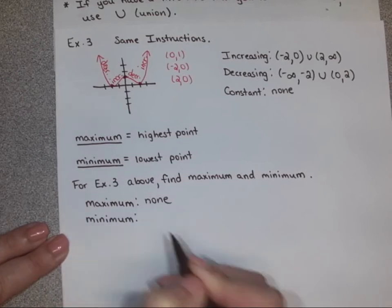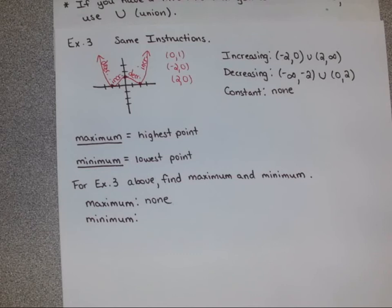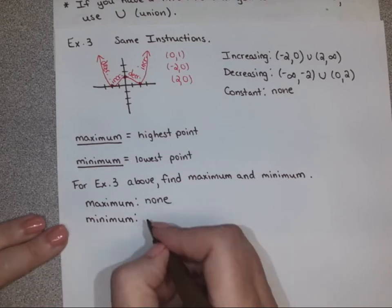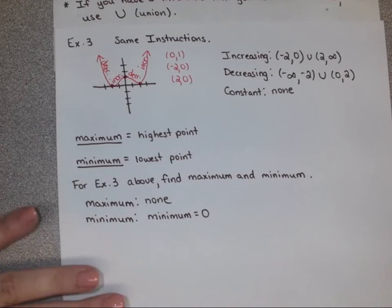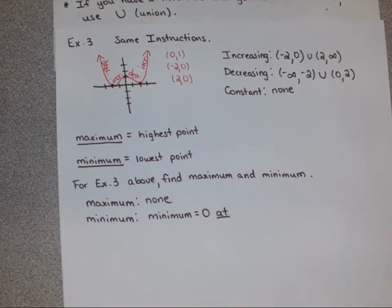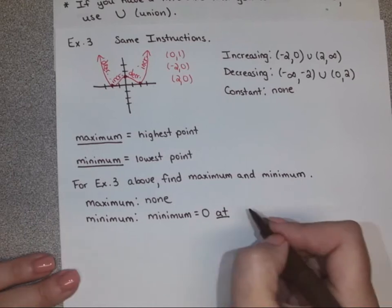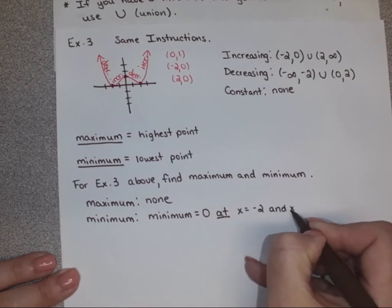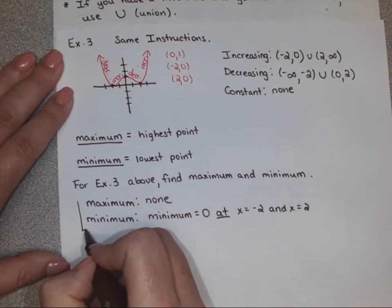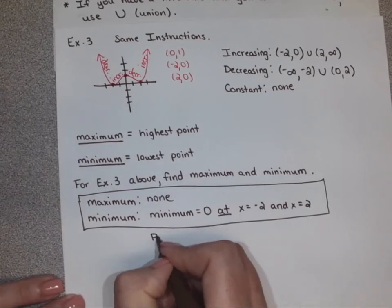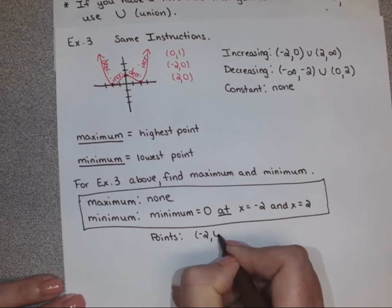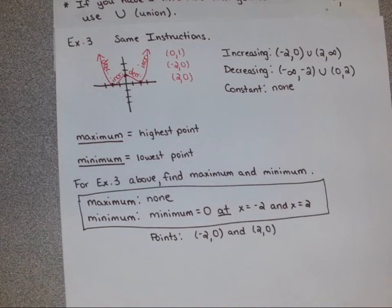There's actually a two-way tie for the minimum. The minimum value is zero, but if I want you to tell me where those are located — what x values — there are actually two low points: at x equals negative two and at x equals two. On MyMathLab it's going to ask you how low it goes, and then where those low points are located.